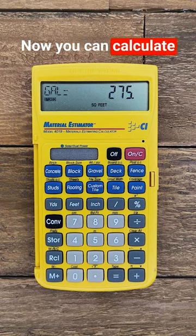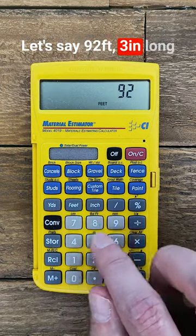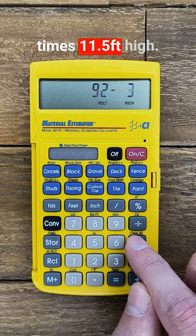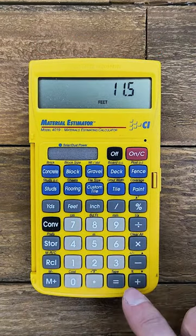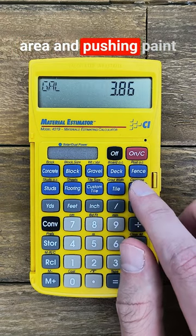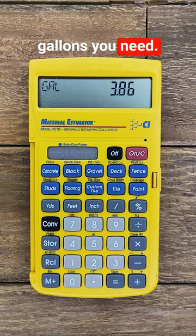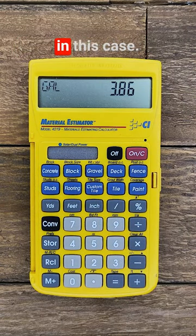Now you can calculate the wall space. Let's say 92 feet 3 inches long times 11.5 feet high. That gives you the area, and pushing paint will show how many gallons you need. 3.86 gallons in this case.